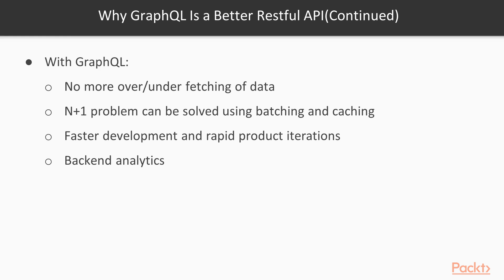With GraphQL, there will be no more over- and under-fetching of data. There will be faster development and rapid product iterations. Thanks to the flexible nature of GraphQL, changes on the client side can be made without any extra work on the server side. As each client specifies exactly what information it is interested in, it is possible to gain a deeper understanding of how available data is being used, which can help in evolving an API and deprecating specific fields that are no longer requested by clients.